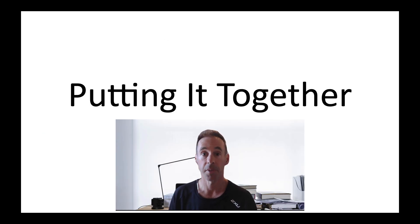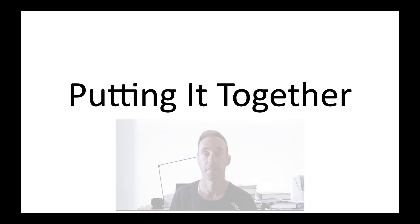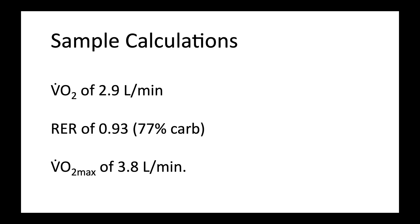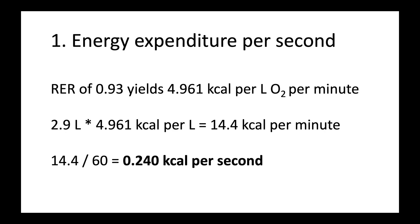I know this has been a lot to wrap your head around, so let's walk through some sample calculations. We'll take a snapshot in time where someone's VO2 is 2.9 liters per minute, their RER is 0.93, and they have a VO2 max of 3.8 liters per minute. Now, the RER value of 0.93 tells us they're getting their energy from about 77% carb and 23% fat. So first, we calculate the energy expenditure per second. So we checked our table, an RER of 0.93 yields 4.961 calories per liter of oxygen per minute. And so we know the VO2 is 2.9, so we multiply that to get 14.4 calories per minute. And I'm interested in per second, so we can do this second by second through the whole session. So we simply divide by 60 and get 0.24 calories per second.